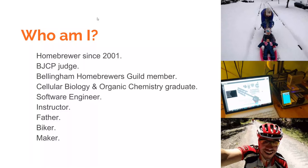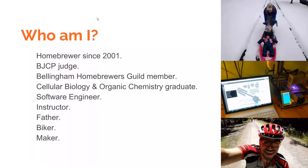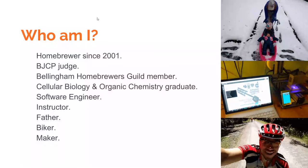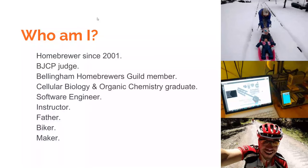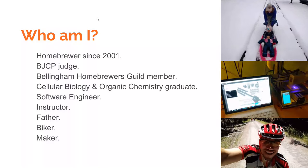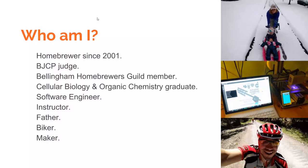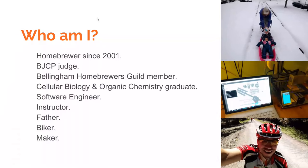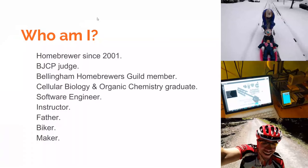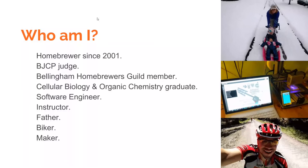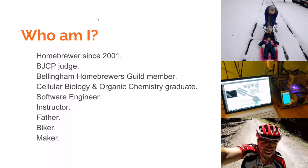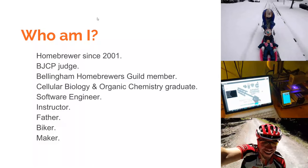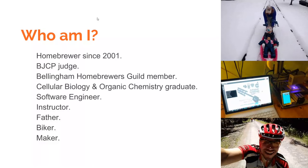What's BJCP? It's the official organization that comes up with all the guidelines for each beer style. They're the ones that say a red has to be this color and this IBU. I can talk with you after about getting into that. I'm a software engineer here in Bellingham at Emergency Reporting.